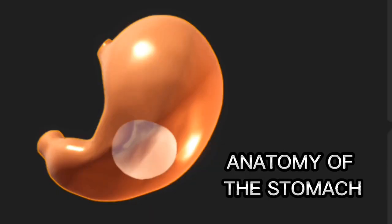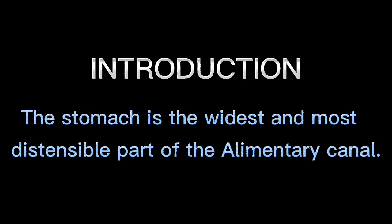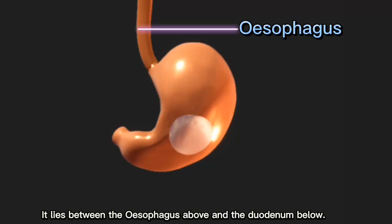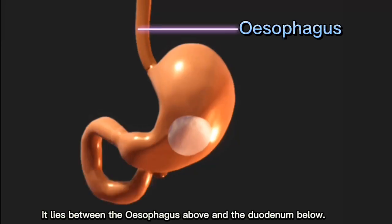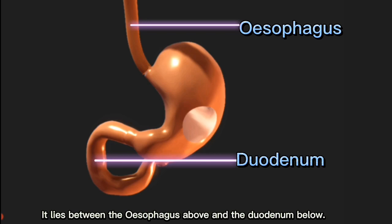Anatomy of the Stomach. The stomach is the widest and most distensible part of the alimentary canal. It lies between the esophagus above and the duodenum below.